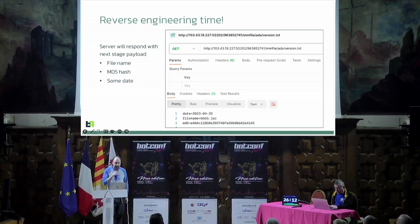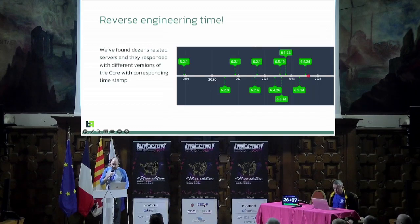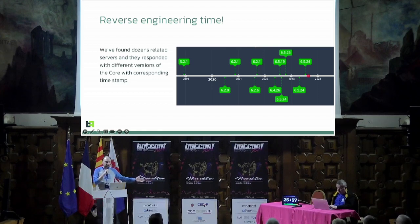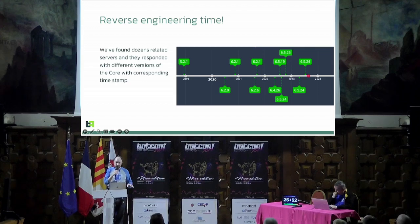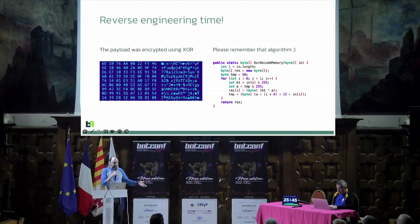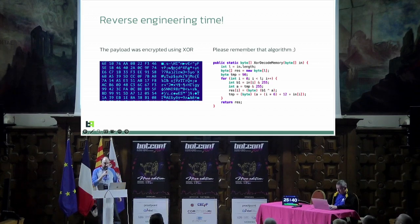So we got three interesting parameters. I found not just one or six servers — I found dozens of them. Each one provided me with a different version.txt file, giving me a whole history of the campaign across different years, versions, and sets. As for the core itself — it's obviously encrypted, but the algorithm is quite simple: a basic XOR. I want you to remember the function name: XOR decode memory.